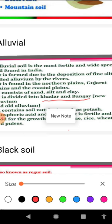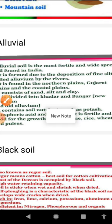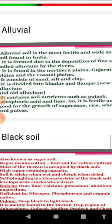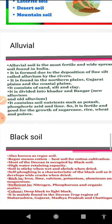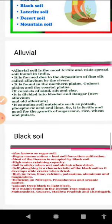With regard to khadar, it is new alluvial soil, and bhangar is old alluvial soil. Khadar is fine-grained while bhangar is coarse-grained. Khadar is more fertile while bhangar is comparatively less fertile. Khadar is found between the river bank and the floodplain area, whereas bhangar is found above the floodplain area where floodwater is unable to reach.